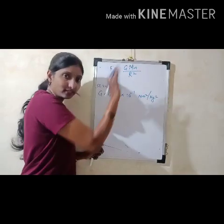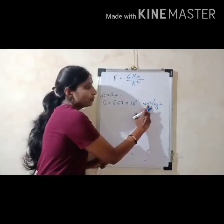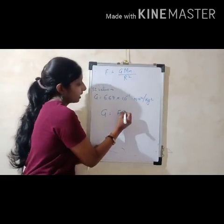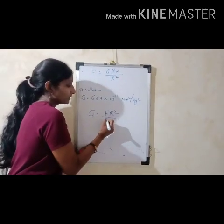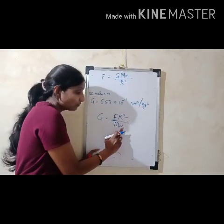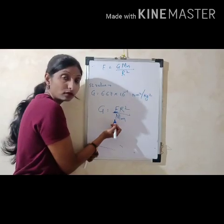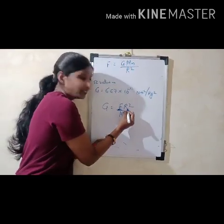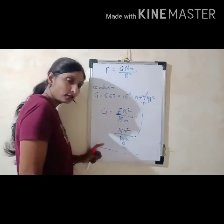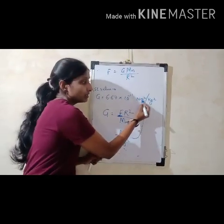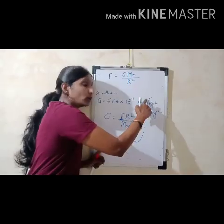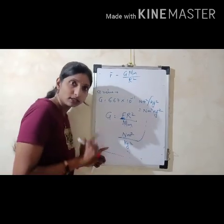This value was discovered by scientists worldwide. Now, why is the unit Newton meter square per kg square? From the formula, G = F R² / (M × m). The SI unit of force is Newton, radius gives meter square, and mass into mass gives kg square. So the SI unit of G is Newton meter square per kg square, which can also be written as Newton meter square kg raised to minus 2.